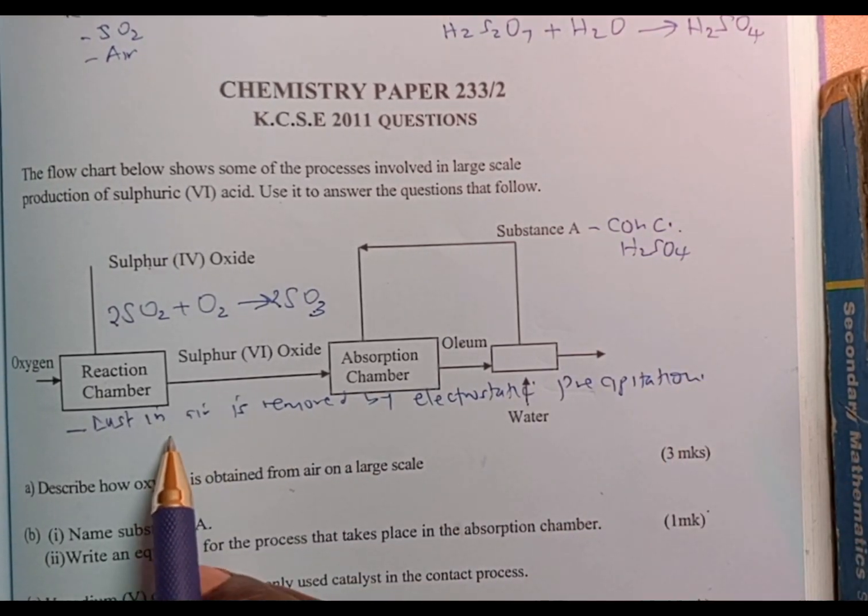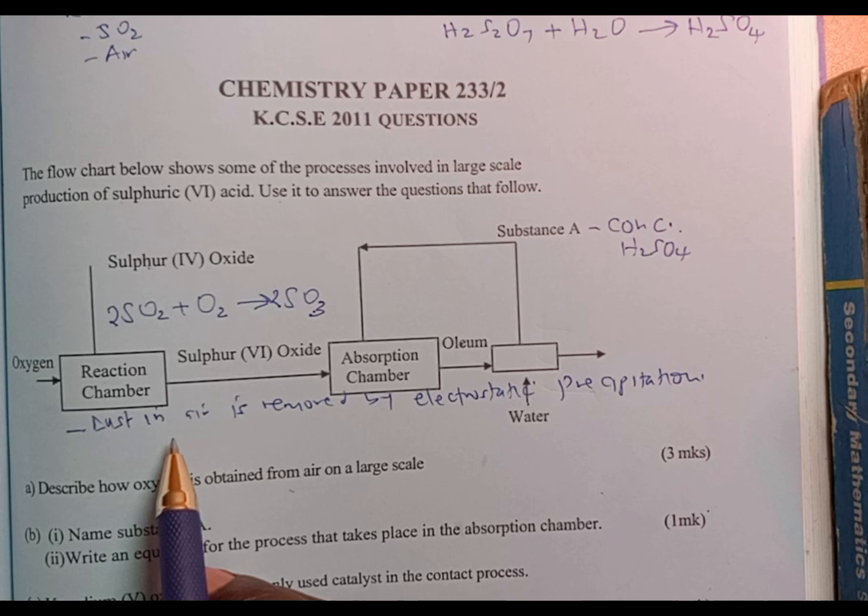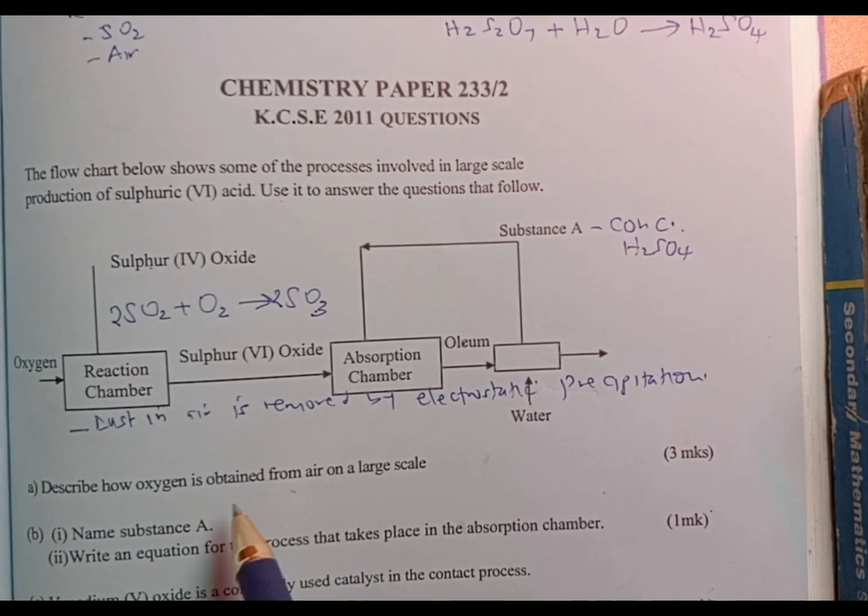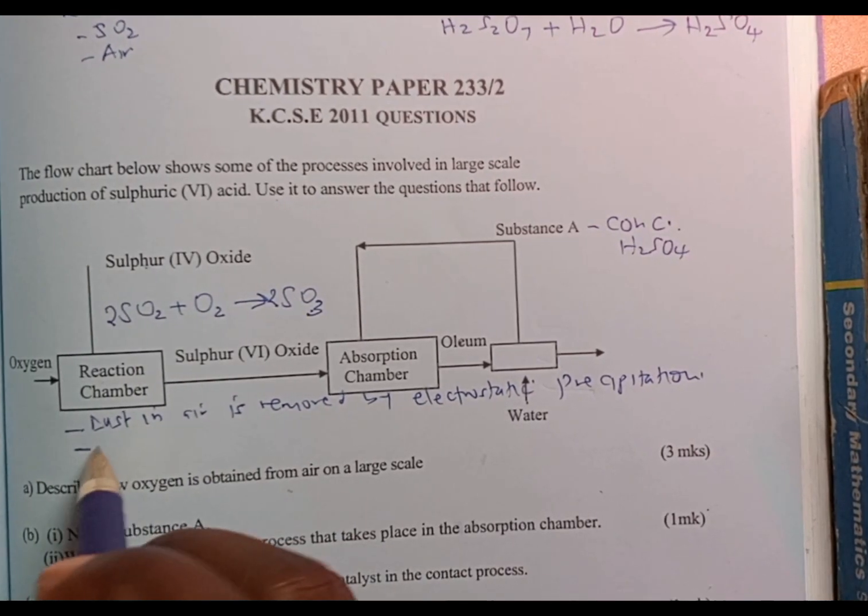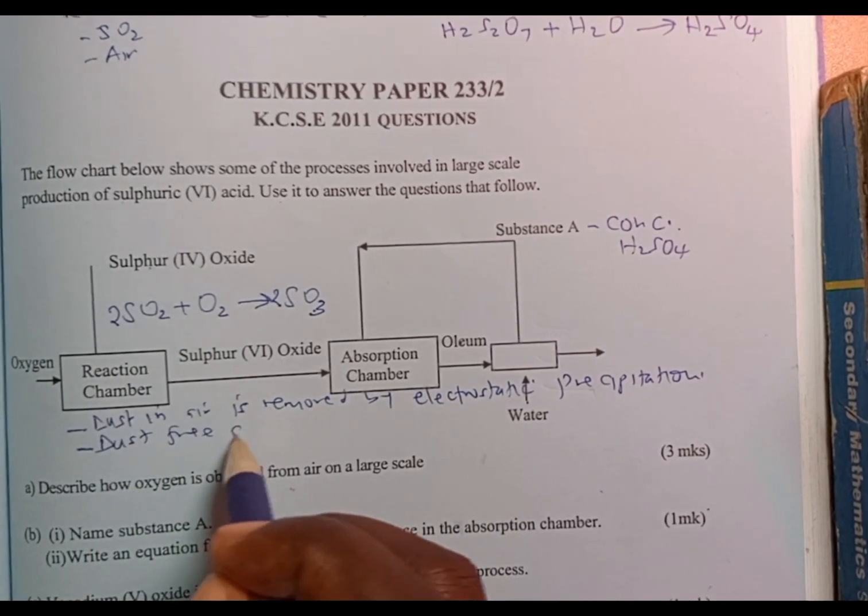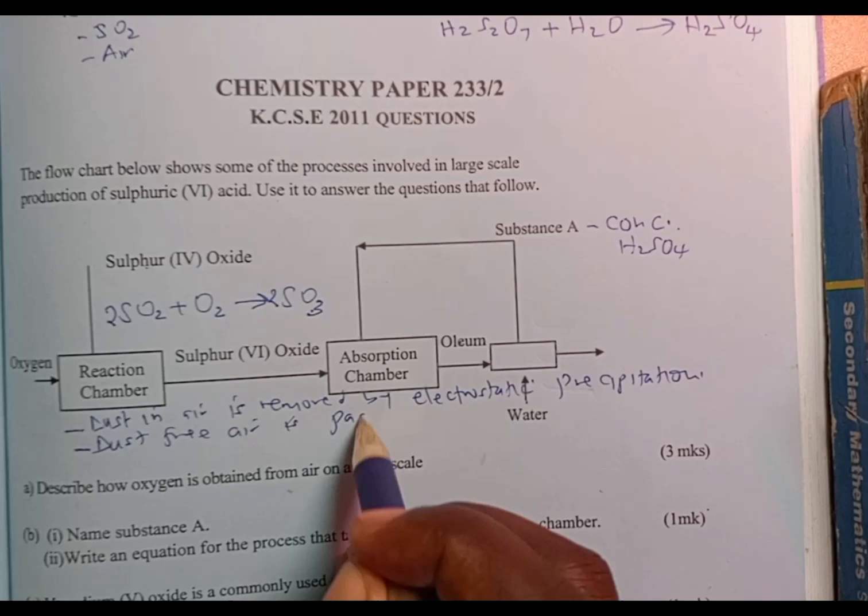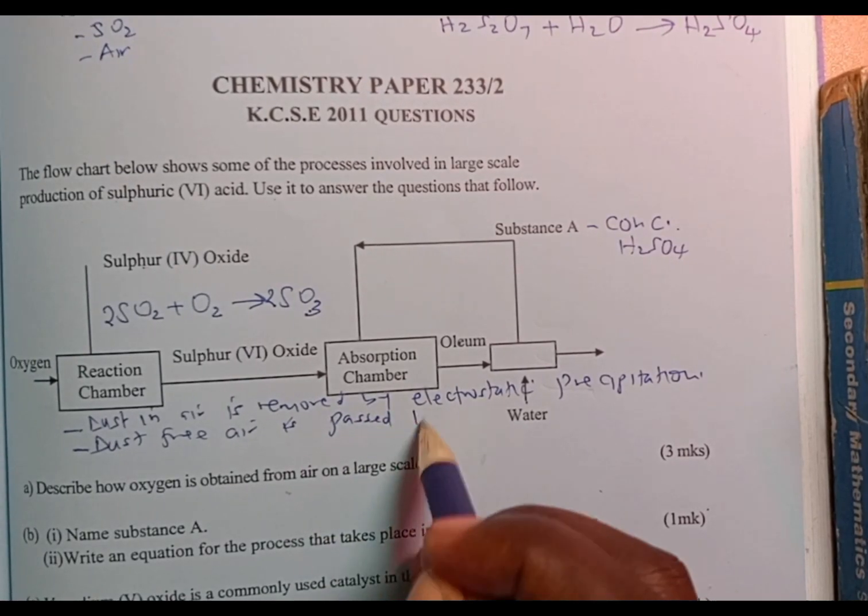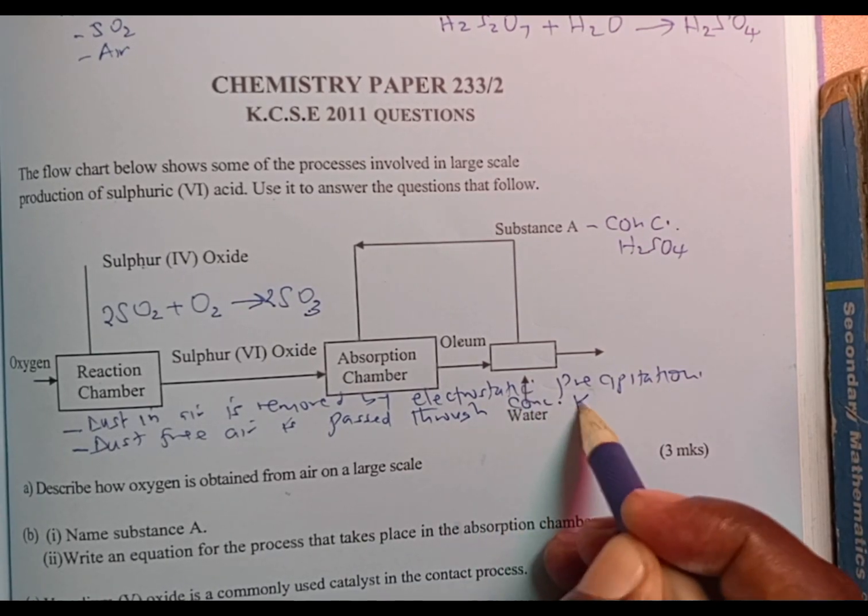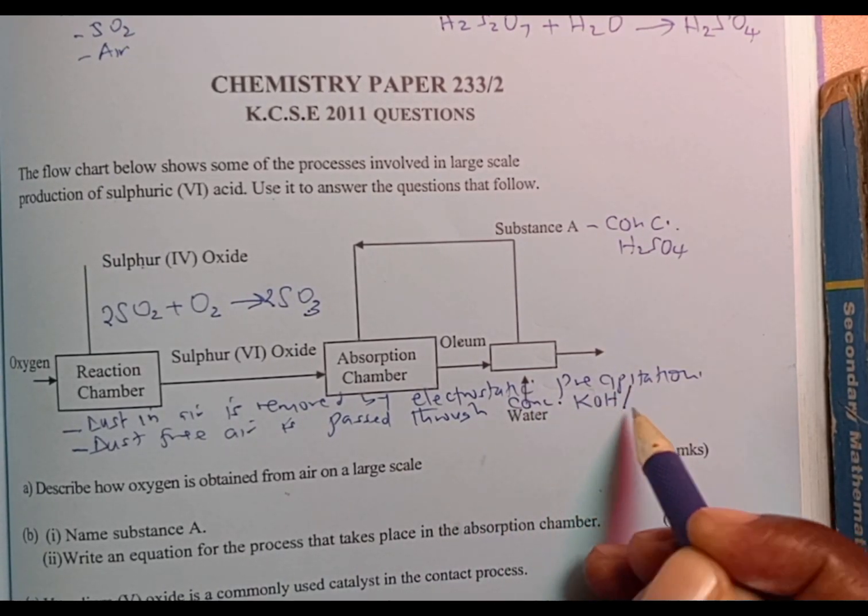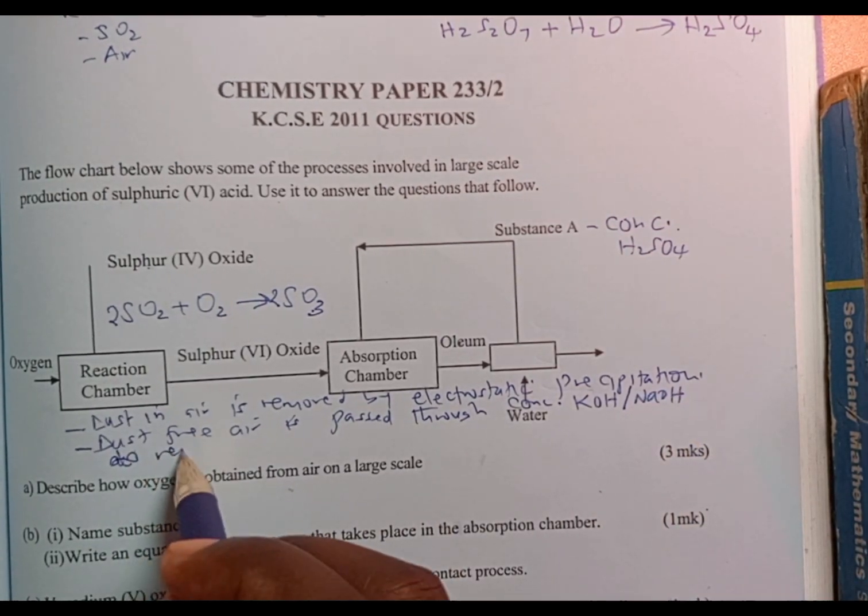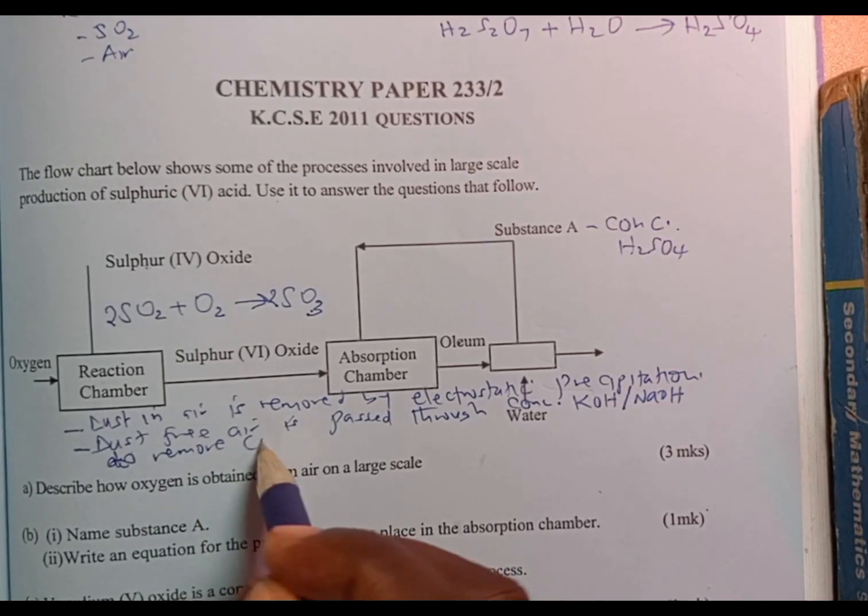First, dust in air is removed by electrostatic precipitation. That is passing air through the filters to remove dust particles by electrostatic precipitation. Then the dust-free air is passed through concentrated potassium hydroxide or sodium hydroxide to remove carbon dioxide.